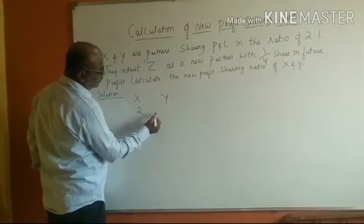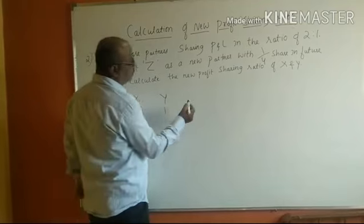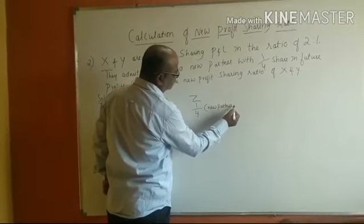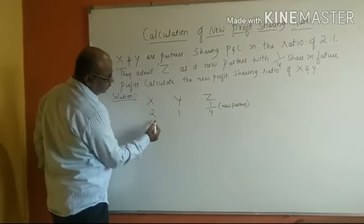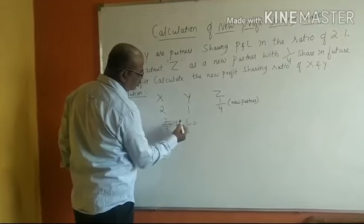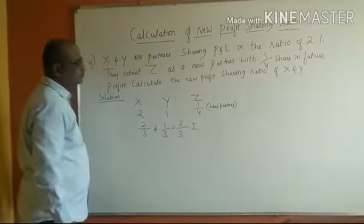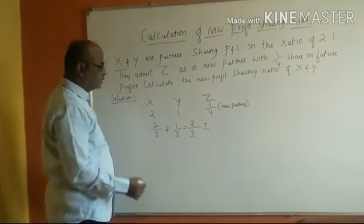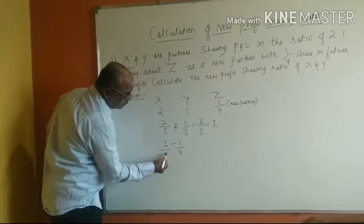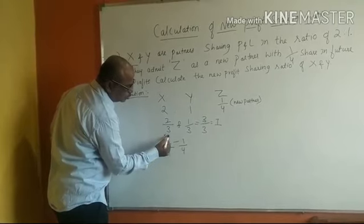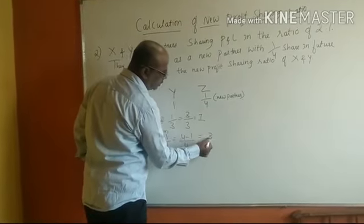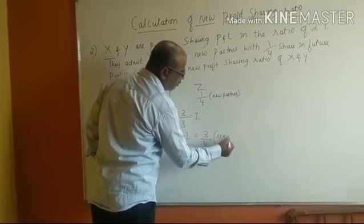X and Y share profits in the ratio of 2 is to 1, and they are supposed to give one-fourth share to the new partner Z. So 2 is to 1 means 2 by 3 and 1 by 3, which is equivalent to 3 by 3, equal to 1. Total profit is always equal to 1. So if total profit is 1, you are supposed to give 1/4 to Z. Now cross multiply: 1 minus 1 by 4 equals 3 by 4, which is the remaining share for X and Y.